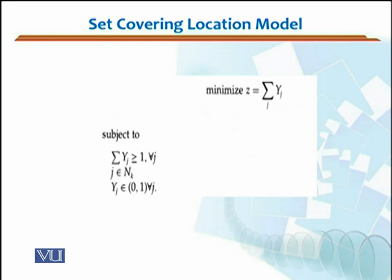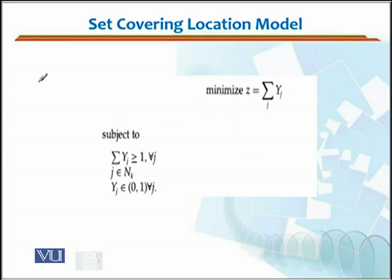Now if you look at this model, we have a minimizing function — minimize z — where what you need to minimize is the sum of yj's for any value of j, subject to different constraints.